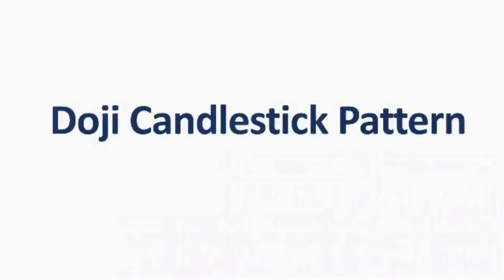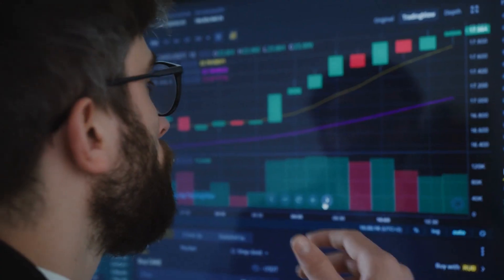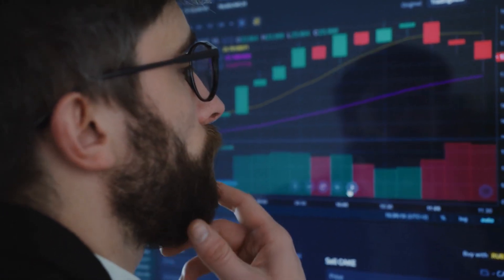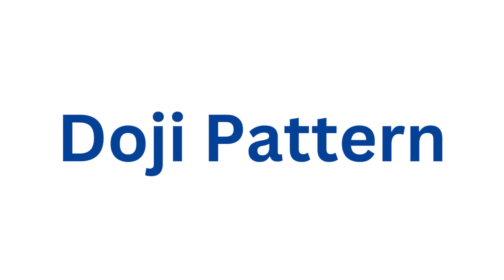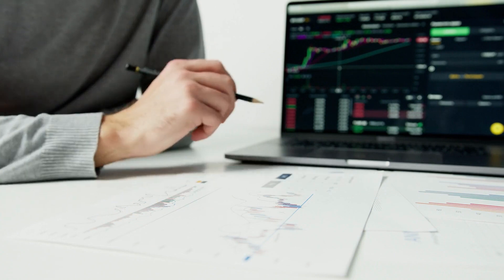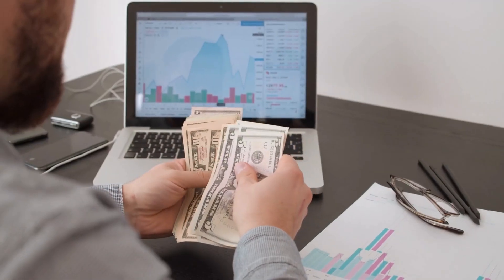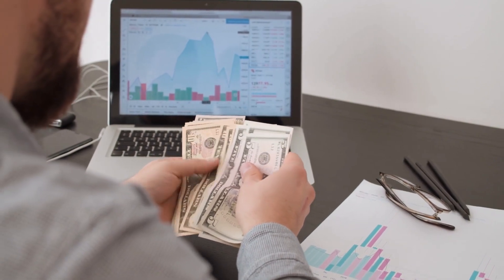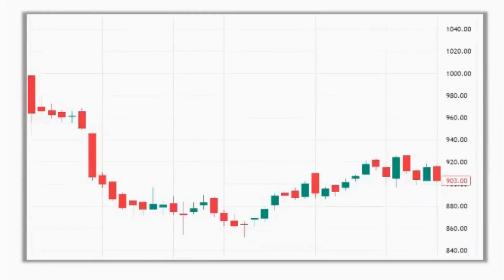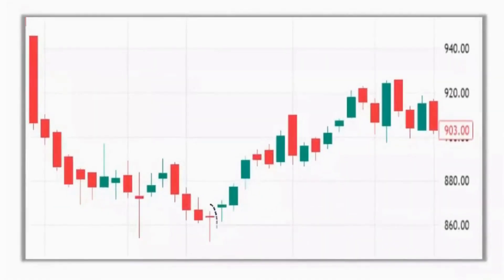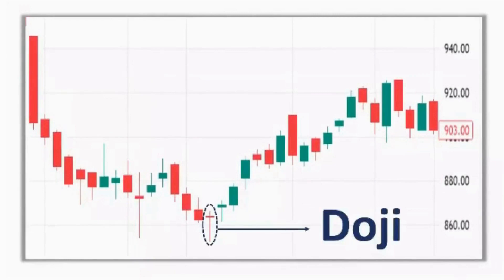Welcome back to Trading Fi. In this video we are going to discuss a powerful candlestick pattern called the doji pattern. As you can see on the screen, that's how a doji candlestick pattern usually looks like. It is a neutral candlestick pattern which basically indicates indecision in the market.